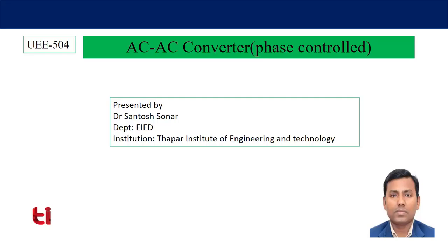Hello everybody. Last class we discussed about on-off control of AC to AC converter. Today I will discuss phase control of AC to AC converter. The difference between the two is that in on-off control, for few cycles our load is connected to source and for few cycles it is disconnected. But here in phase control, in the same cycle — positive or negative half cycle — we will connect our load with the source.